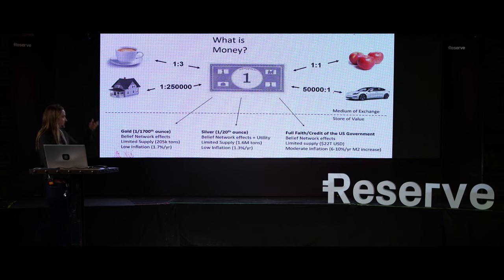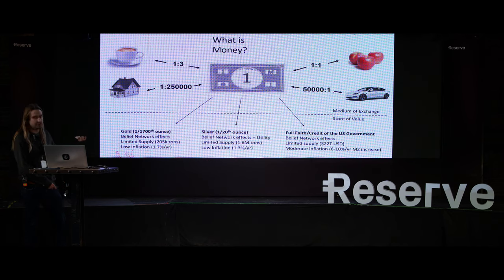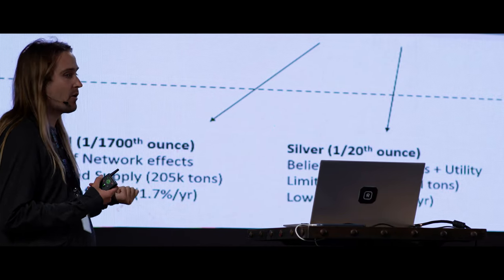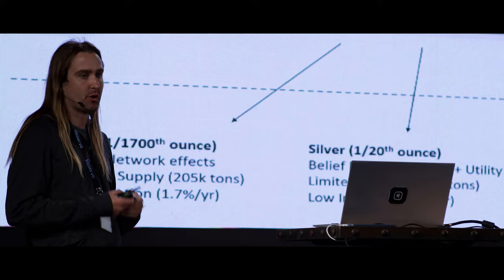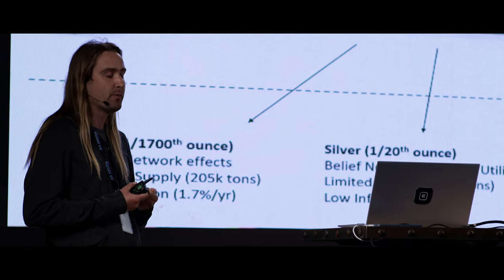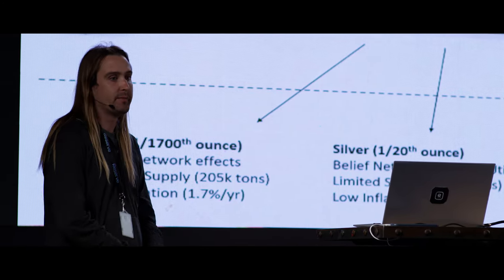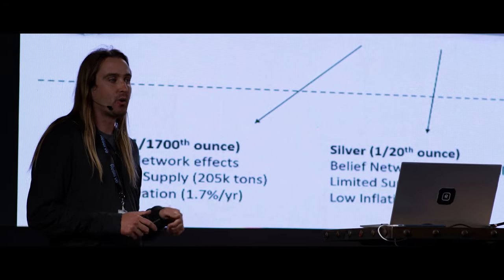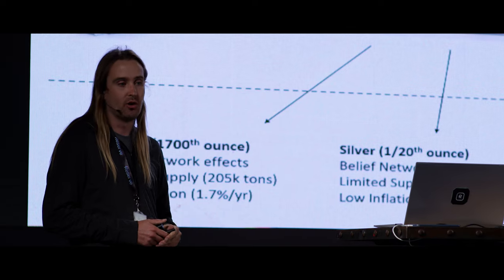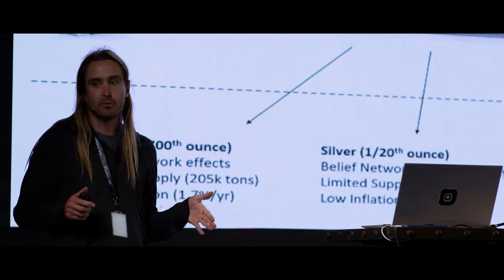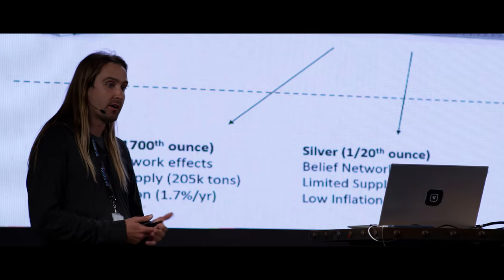If we imagine this one Monopoly dollar redeemable for 1/1,700th of an ounce of gold, we now have something powered by belief and network effects — people believe globally that gold has value. Gold has a limited supply of about 205,000 mined tons, and low inflation: every year we mine about 1.7% of the total supply.